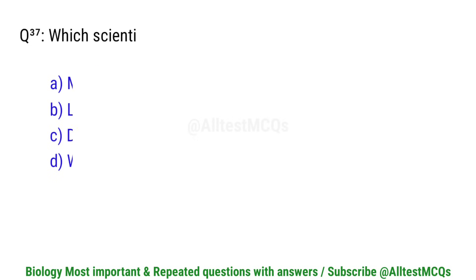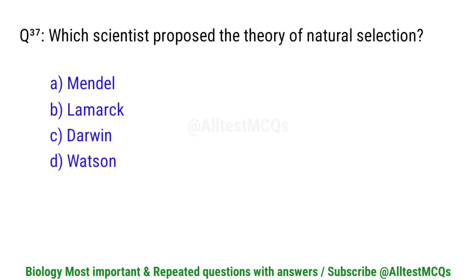Question number 37. Which scientist proposed the theory of natural selection? Right option is C. Darwin.